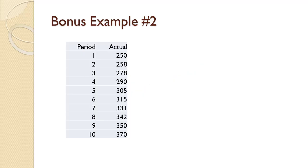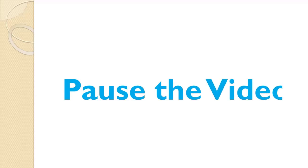For the data shown on the slide, we wish to compute the trend-adjusted exponential smoothing forecast. The forecast will begin in period 5. We use an alpha value of 0.10 and a beta value of 0.30. We wish to carry out the forecast for as far as is possible. Note that this is the same data we used in the first bonus example. Since you've seen an example already, let me suggest that you pause the video and try to work this problem on your own. Once you're done, you can use the video to check your work and spot any mistakes you might have made.